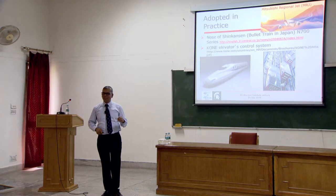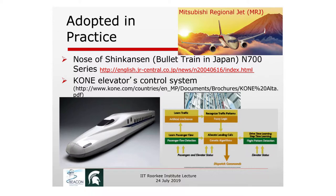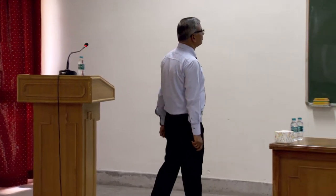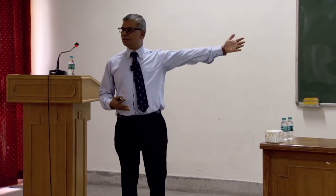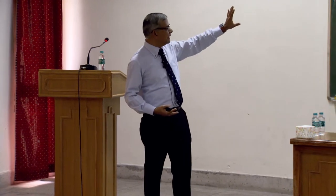Are these methods only for academic toy problems? No — there are many real-world applications. In Japan, the nose of the bullet train was designed using genetic algorithms — one of the evolutionary optimization approaches. I was fortunate to be at the conference where it was unveiled. Engineers first tried a standard point-based method, but the resulting design failed wind tunnel testing — it likely got stuck in a local minimum. Someone then suggested GA, and the GA-produced design passed the wind tunnel test.